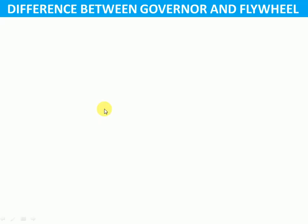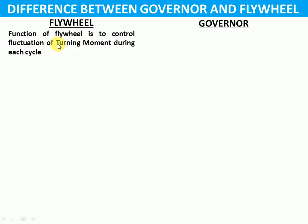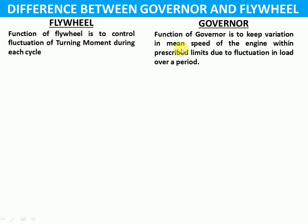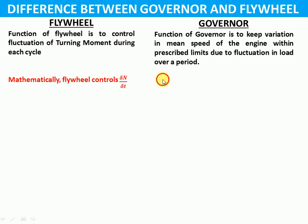Now let us take step by step the differences between governor and flywheel. First, the function of the flywheel is to control the fluctuation of turning moment during each cycle, whereas the function of the governor is to keep variation in the mean speed of the engine within prescribed limits due to fluctuation in load over a period of time. Second, mathematically, the flywheel controls dN/dt whereas the governor controls dN — that is, change in speed.